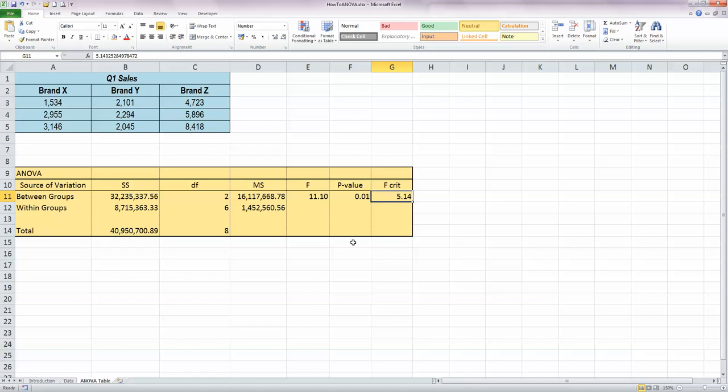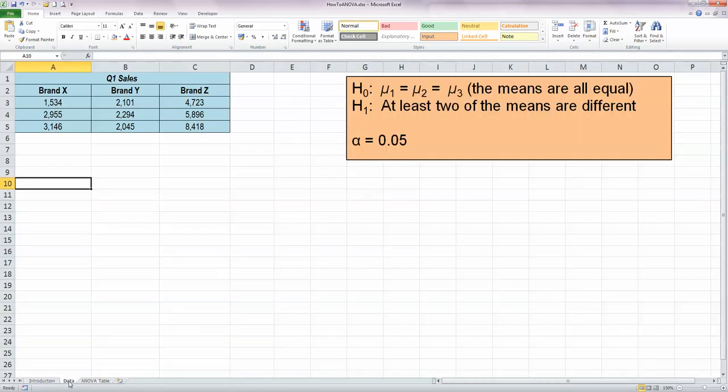So now let's go and see how we generate this actual table here. As always with our stats tests, we first of all state our null and alternate hypothesis. Our null hypothesis in this and most ANOVA tests, one-way ANOVA tests, is that the means are all equal. So in other words, the mean of brand X is the same as the mean of brand Y is the same as the mean of brand Z. And our alternate, H1 hypothesis, is that at least two of these means are different. We're going to use a 5% significance level here, so our alpha value is going to be 0.05.